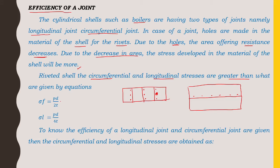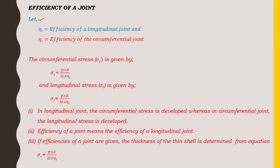In the riveted shell, the circumferential and longitudinal stresses are greater than what are given by the equations: σf (circumferential stress) and σl (longitudinal stress). To find the efficiency of the longitudinal joint and circumferential joint, let ηl = efficiency of longitudinal joint and ηc = efficiency of circumferential joint.